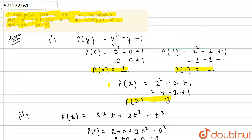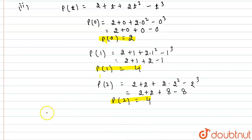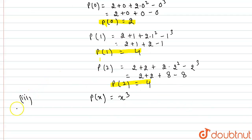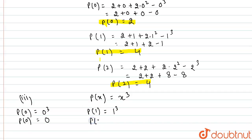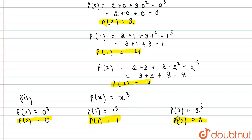The third polynomial is p(x) equals x cubed. Again I need to find p(0), which will be 0 cubed, so p(0) equals 0. Now p(1) will be 1 cubed, so p(1) is 1. Now p(2) will be 2 cubed, and 2 cubed is 8, so p(2) is 8. These are the values for p(0), p(1) and p(2) for this given polynomial p(x) equals x cubed.